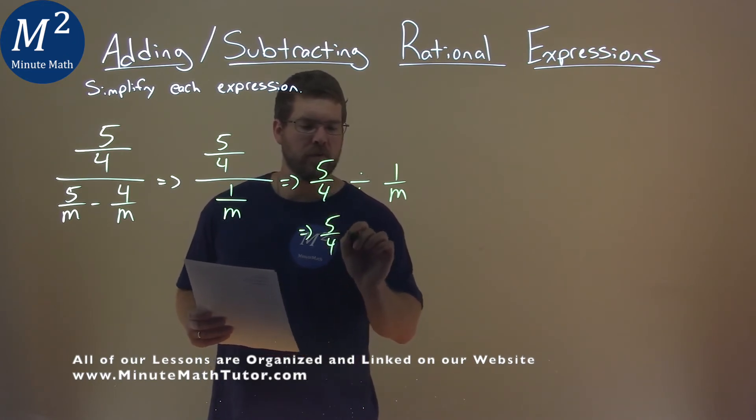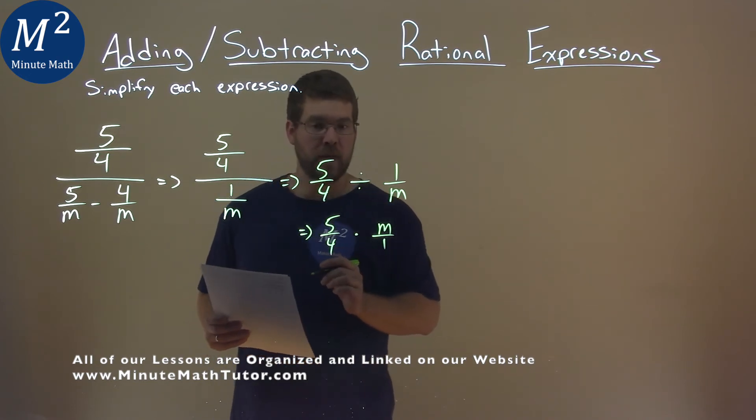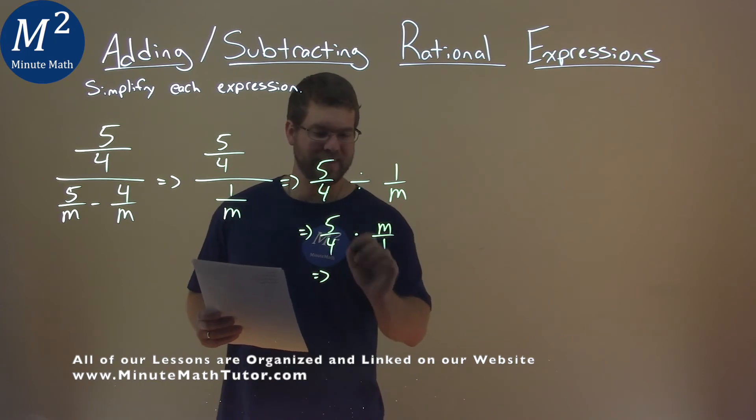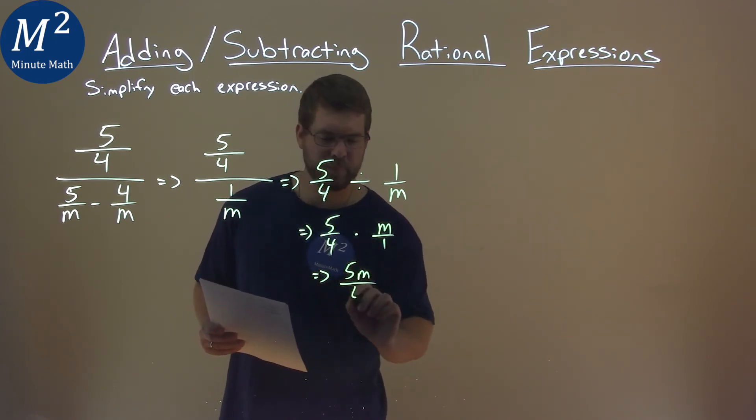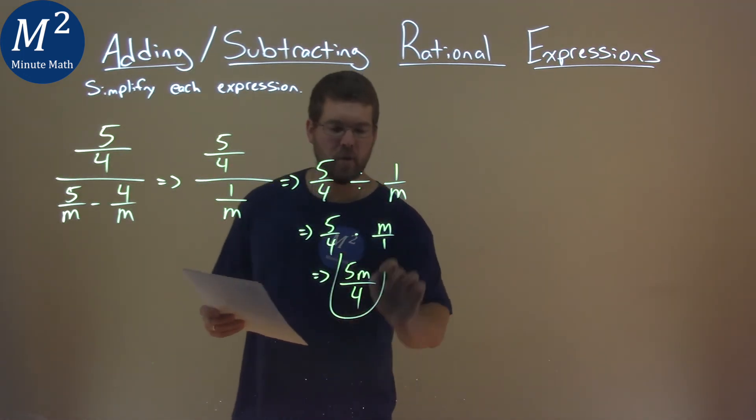So we have 5 fourths here times m over 1. And now with that, we can easily multiply this out. 5 times m is 5m, and 4 times 1 is 4. And so our final answer here is 5m over 4.